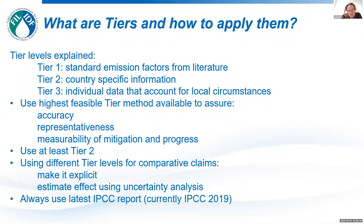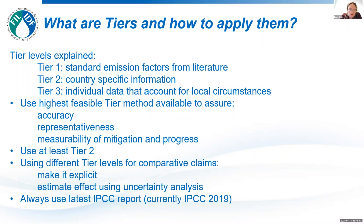We ask you to at least strive for tier two. If you are comparing two products or two studies, you really have to be aware that the tier levels used may differ. Make it explicit that there are differences in tier levels applied, and if there are differences, we recommend estimating the effect using an uncertainty analysis — because a difference in tier level can result in a different footprint that reflects methodology rather than how the product is produced. We also recommend always using the latest IPCC report, which is currently the IPCC 2019.